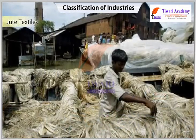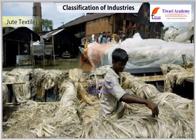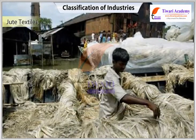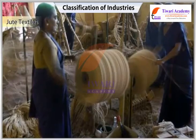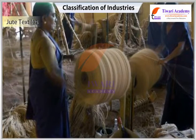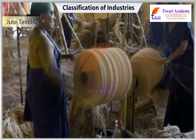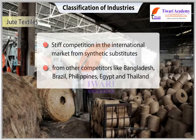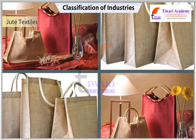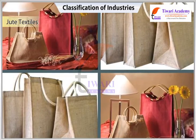Kolkata as a large urban center provides banking, insurance, and port facilities for export of jute goods. The jute industry provides direct employment to 2.61 lakh workers and supports the livelihood of around 4 million farm families. Around 0.14 million people are engaged in the tertiary sector and allied activities. The industry faces stiff competition in the international market from synthetic substitutes and from competitors like Bangladesh, Brazil, Philippines, Egypt, and Thailand.